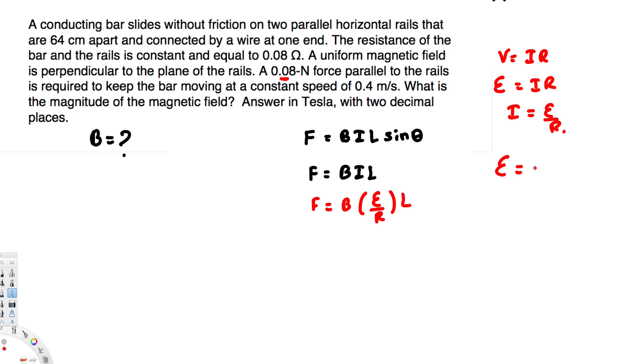And emf is equal to BLv. So for a emf generated in the moving wire is equal to BLv. B is the magnetic field, L is this length right here, this 64 centimeter. Okay, this is they are saying two parallel horizontal rails that are 64 centimeters apart. So this apart length is L. And here also this apart length is L.